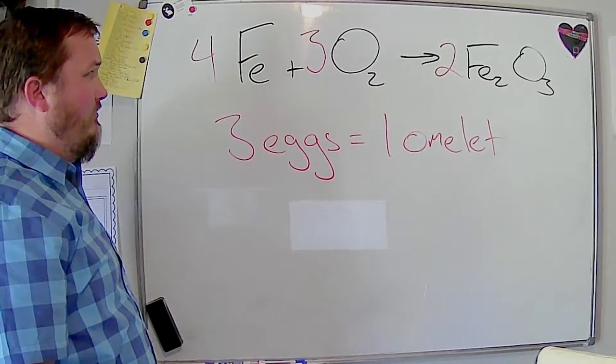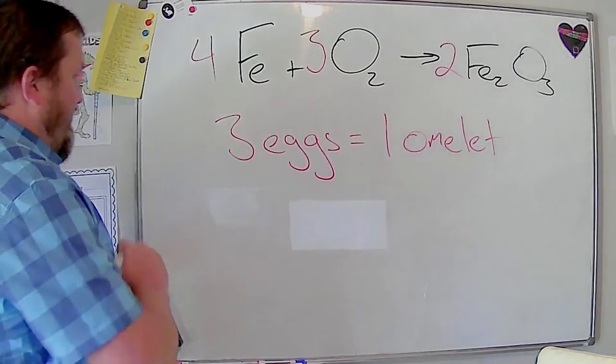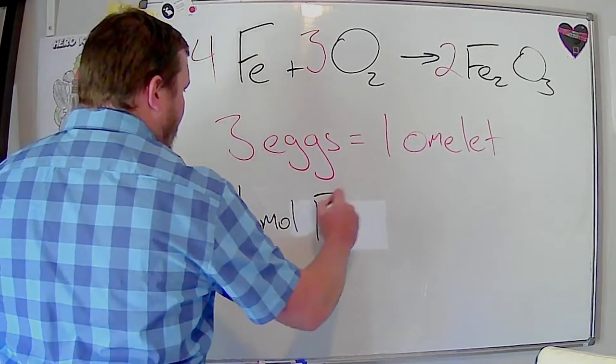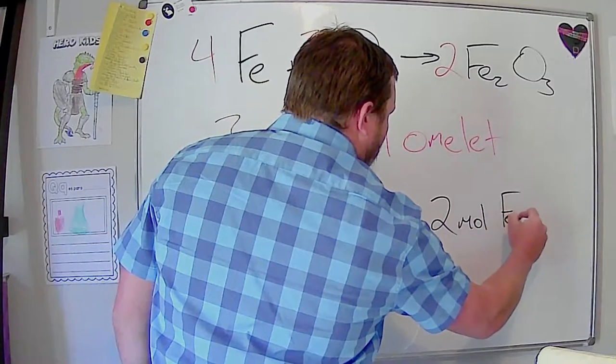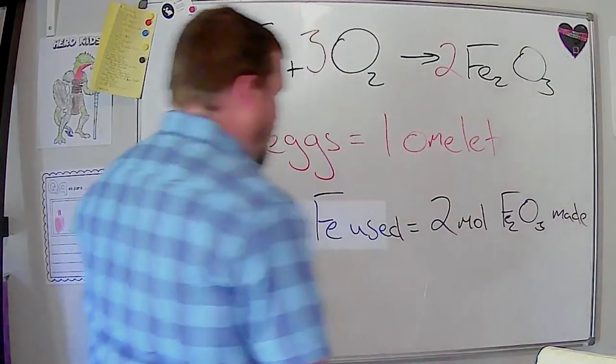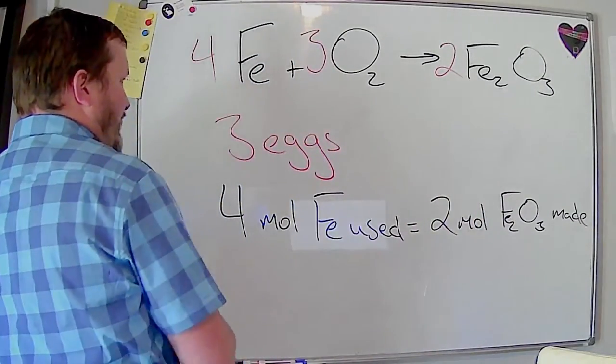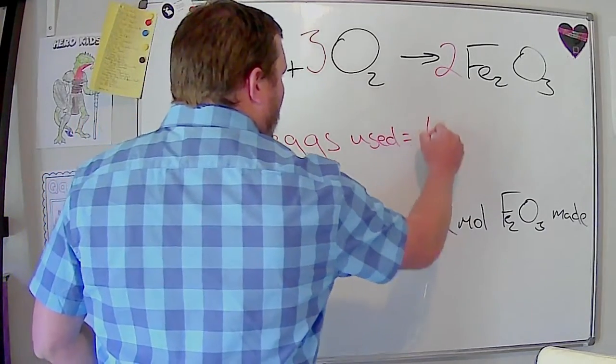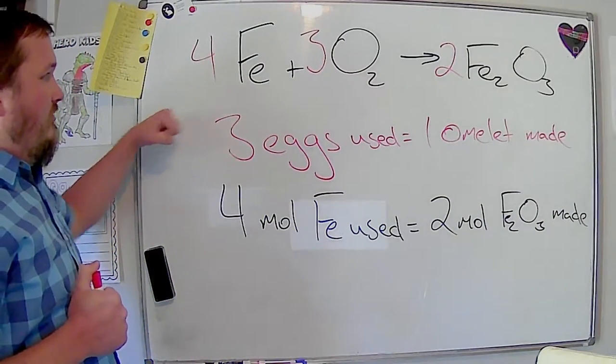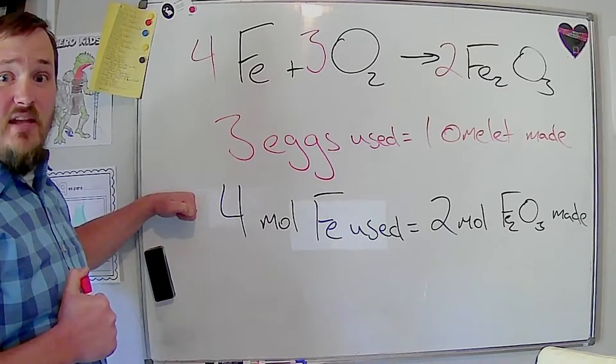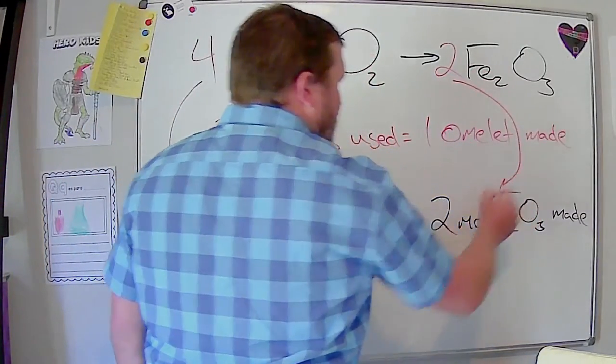I have no idea if that's spelled right. I think it is. Beside the point, right? The same way we can write a conversion that says three eggs equals one omelet, we can say four moles of iron used equals two moles of Fe2O3 made. All right. And I didn't write in the used versus made here for the eggs, but I could write for every three eggs used one omelet made. And so this makes a lot of sense. This is a little bit more abstract, takes some getting used to, but all it's doing is pulling the coefficients from the balanced reaction and turning them into a conversion.